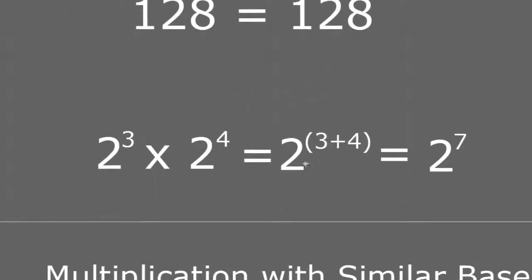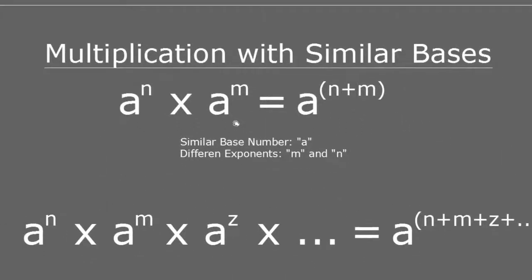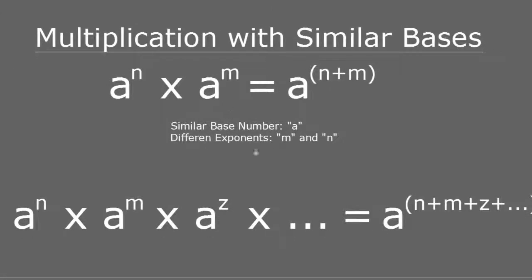So thanks to this property I can just add the exponents and know that 2 to the power of 3 times 2 to the power of 4 is 2 to the power of 3 plus 4, which is 2 to the power of 7. I don't have to do all that mess. So remember, if you're doing multiplication and you have similar bases — the bases are the same and the exponents are different — that just equals a new number where the base is the same and the exponent is the sum of the exponents you were multiplying.